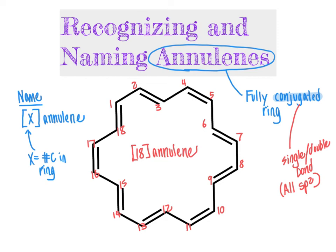You may be wondering, since the term annulene can describe any fully conjugated ring, whether benzene can be described as an annulene. You would be right — yes, benzene can be described as an annulene. Benzene would be [6]annulene, since there are six carbon atoms in that fully conjugated ring. This applies to both our simplest examples with alternating single and double bonds in the ring, as well as more complex scenarios. But for all of them, there will be rings of continuous sp2 carbon atoms — no heteroatoms in the ring. The term annulene refers specifically to systems where we have just carbon atoms in the ring.